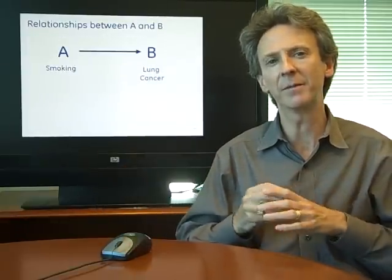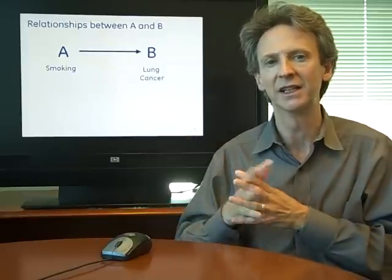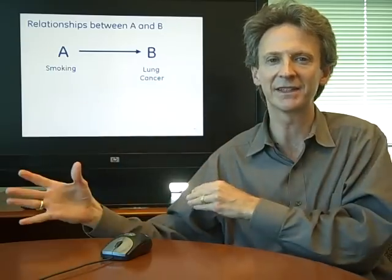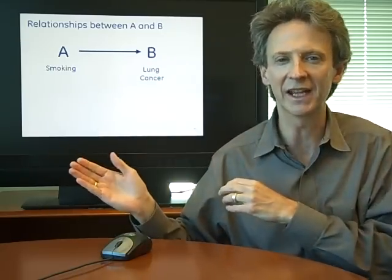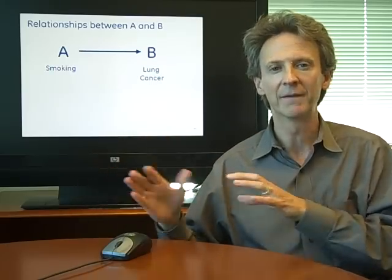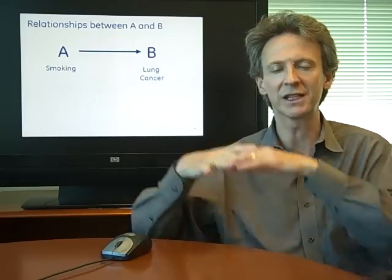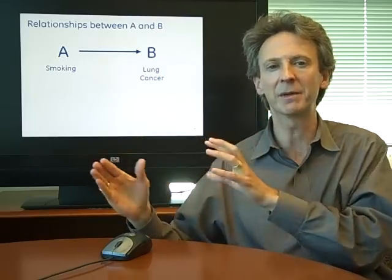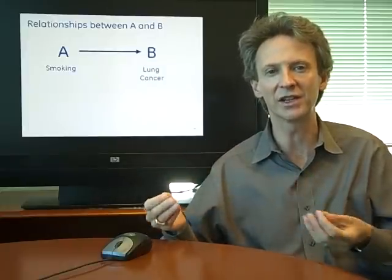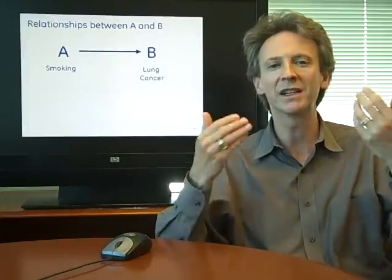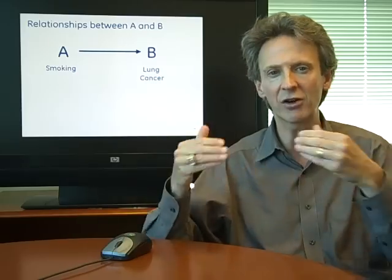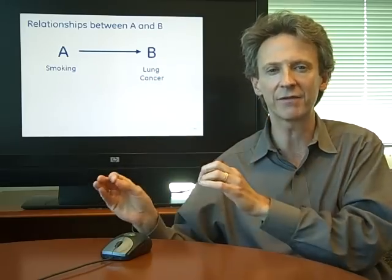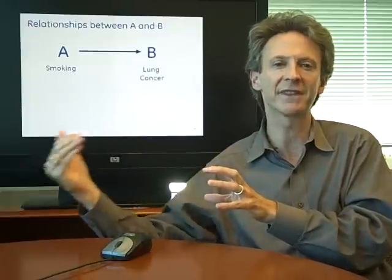Let's start with two things — all these examples will involve two things — and it starts with A causes B, and we need to figure out whether that's indeed true. Smoking causes lung cancer. This is a case where that is true. There's a high correlation between the population that smokes and the population that has lung cancer. But in this case we know it's cause and effect because we understand the biology — not just the correlation. We understand what smoking does to the body, to the lungs, and how that causes lung cancer to occur.